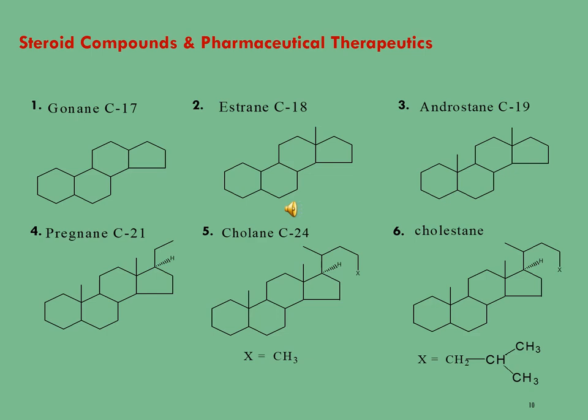The second molecule consists of 18 carbon atoms and is named estrane. This molecule has an additional methyl group at carbon 13 and can be considered a derivative of the gonane molecule. Estrane is obtained from estrogen steroid hormones, bio-transformations of Pseudomonas aeruginosa, and also from corn oil extraction. It is soluble in chloroform, DMSO, and methanol. It is used as an active metabolite for the treatment of amenorrhea, abnormal uterine bleeding, and for the prevention of pregnancy.